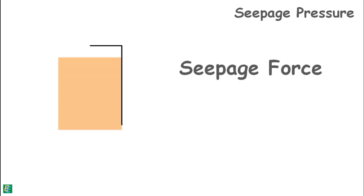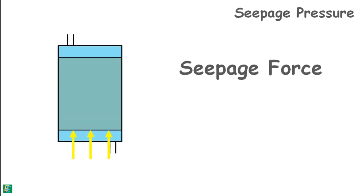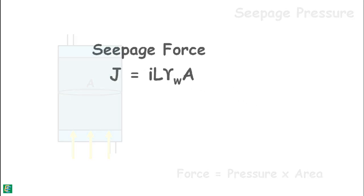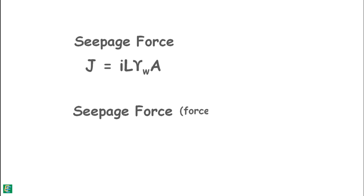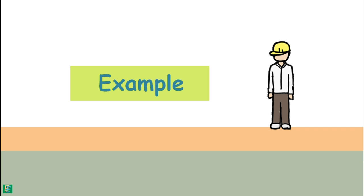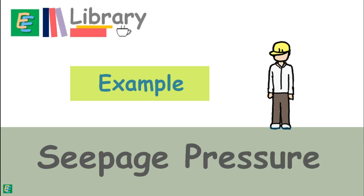Seepage pressure can also be expressed as seepage force — the force applied by the flowing water to the soil structure. Force equals pressure multiplied by the area over which it is applied. The total seepage force on a soil sample of area A is represented by capital J. Seepage force is usually expressed as force per unit volume, represented by small j.